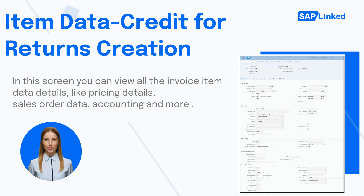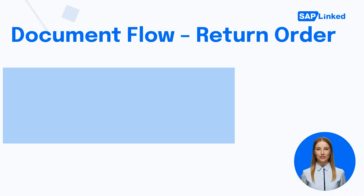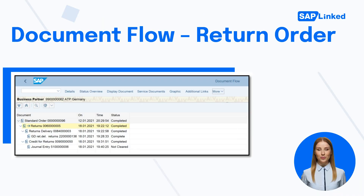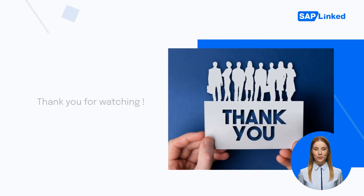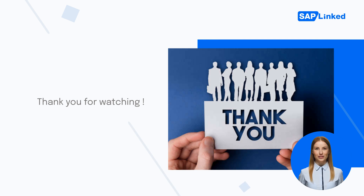Now we will check the document flow. Go to transaction VF03 and click on the Document Flow button. You will see that once your billing document is created, the order status is changed to Completed. Thank you for watching, and we hope this demonstration helped you to create returns in SAP.